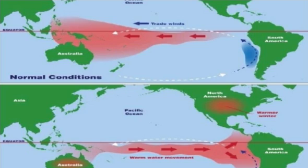Pashchimi Prashant shetra — jahan Asia aur Australia ki sima banti hai — mein garm satahi jal ka prabhav hota hai. Viprit pavaon ke kaaran Indonesia mein samudr ki satah Ecuador ke tulna mein lagbhag 0.5 meter adhik aur 4 to 5 degree Fahrenheit garm hoti hai. Garm jal ke pashchim ki or bahaav ke kaaran Ecuador, Peru aur Chile ke tatonon par satah ki or thande jal ka sthar bhar jaata hai. Is prakriya ko upwelling ke roop mein jaana jaata hai. Upwelling ke kaaran samudr ke upri satah euphotic zone mein thande, poshak tattvon se yukt jal aa jaata hai.